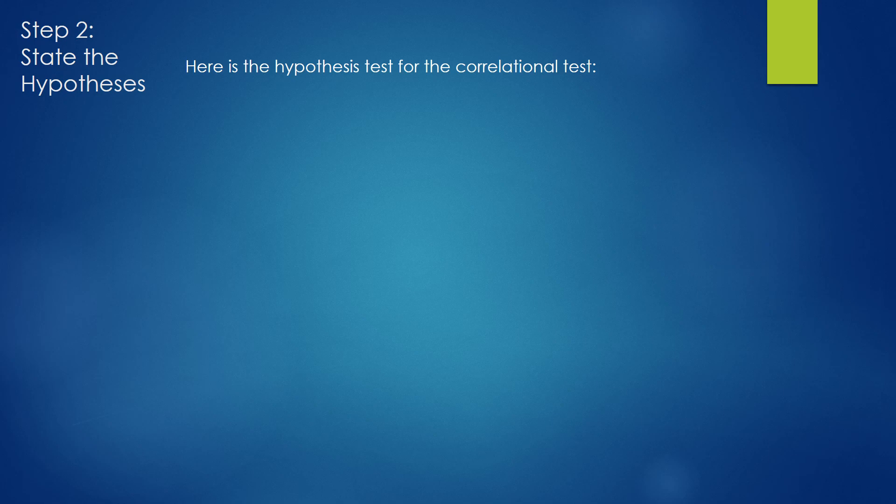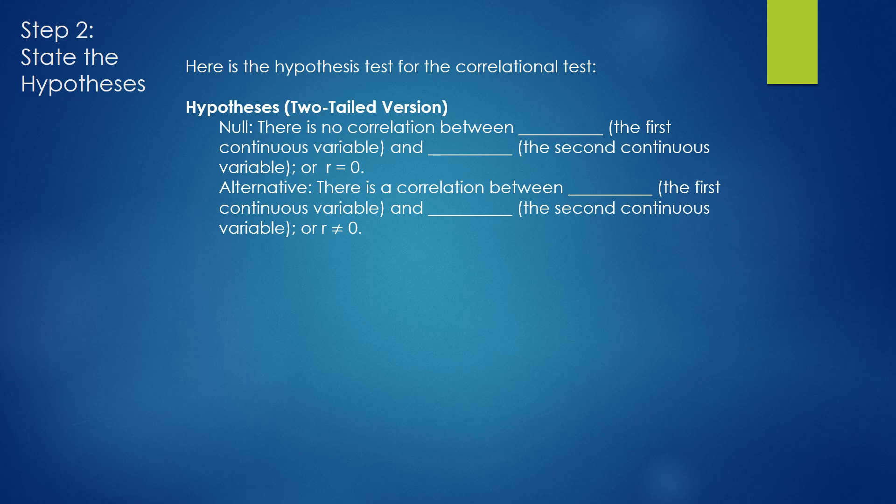Before we can conduct the hypothesis test, we need to know the hypotheses. The null hypothesis states there is no correlation between the variables, or r equals 0. The alternative hypothesis says there is a correlation between hypotheses, or r is not 0. Remember, r is the APA symbol for the correlational statistic.